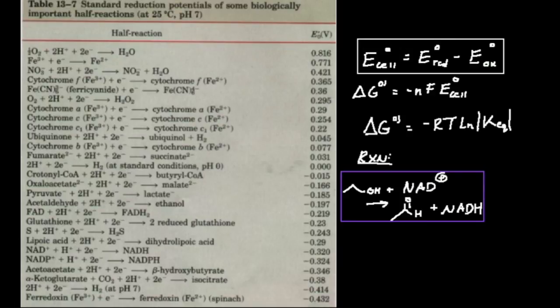In this case, NAD going to NADH is part of the reaction — that's the reduction. I can find it right here in the table: NAD going to NADH has a cell potential of negative 0.320 volts. So the reduction potential for NAD to NADH is negative 0.320 volts.